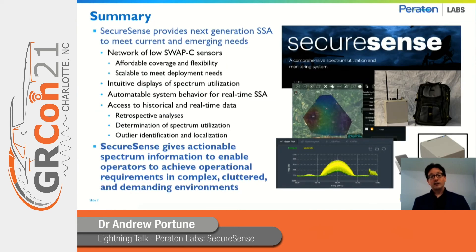In summary, SecureSense was designed to provide the next generation of spectrum situational awareness, to meet current as well as emerging needs in a broad range of different environments. Through a network of low-size, weight, and power, low-cost sensors, we provide affordable coverage and flexibility that's scalable to meet deployment needs. The system has intuitive displays of spectrum utilization, as well as automatable system behavior for real-time spectrum situational awareness, and access to historical as well as real-time data.